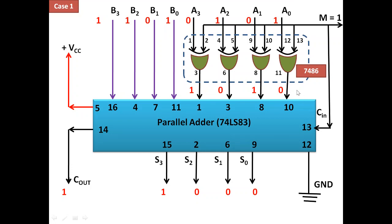The XOR gates produce the one's complement. To get the two's complement, we need to add 1, so we connect the control line to the carry-in. This adds 1 to 1010, giving 1011 internally. When 1011 is added with the minuend 1101, the result is 10000. Since carry-out is 1, we can assume the result is positive, and after dropping the carry, we accept 1000 — which is 8 — as the result.